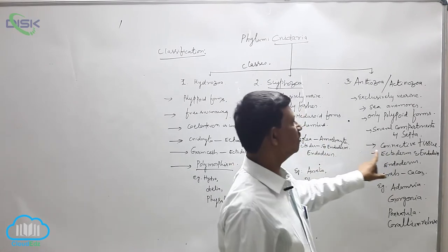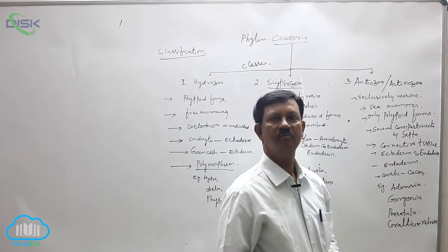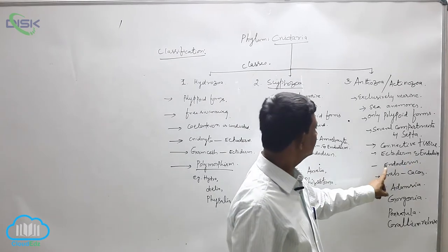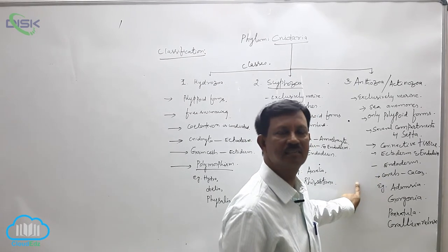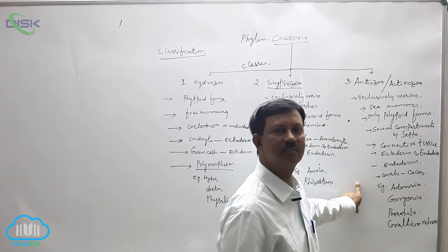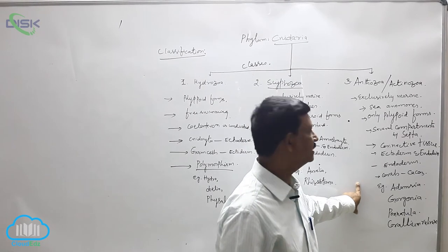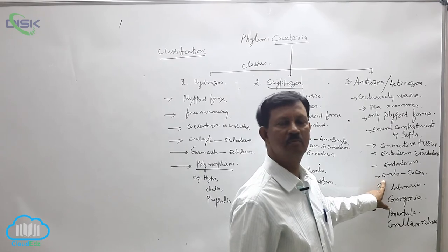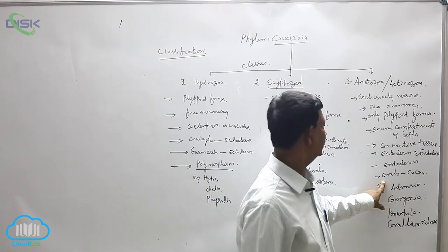Cnidocytes are present in the ectoderm as well as in the endoderm. Germ cells or reproductive cells develop from the endoderm. An important character of this class is that an exoskeleton is present in most animals, which contains calcium carbonate — these are commonly known as corals. The best example is the Great Barrier Reef, which is present near the seashore of Australia.